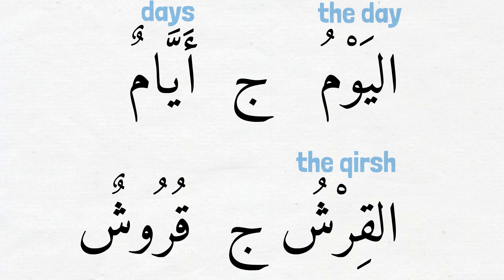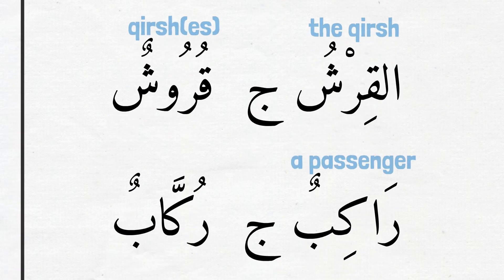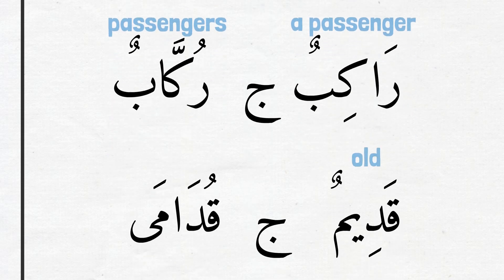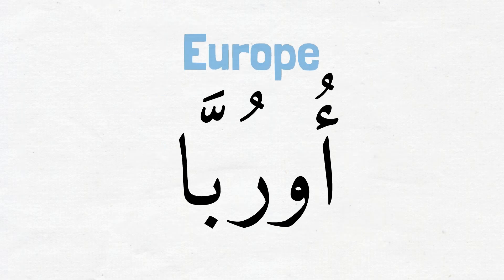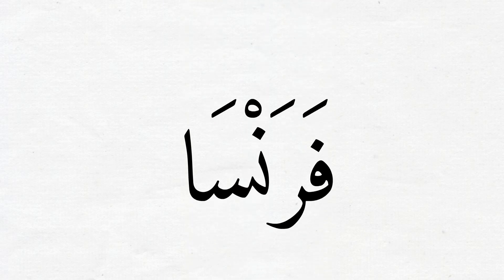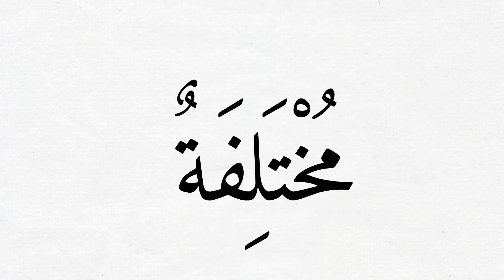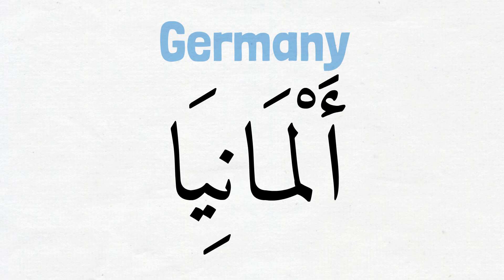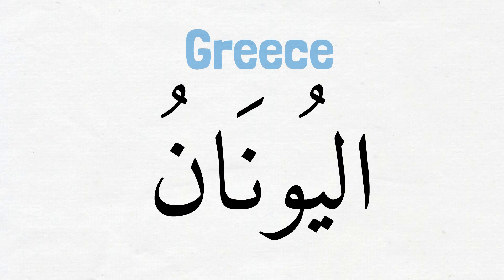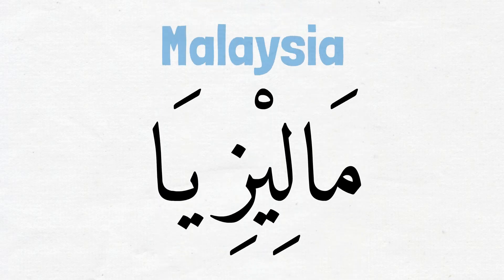القرش — plural قروش; راكب — plural ركاب; قديم — plural قدام; الجيب — the pocket, plural جيوب; أوروبا means Europe; فرنسا is France; مختلفة is different; ألمانيا is Germany; اليونان is Greece; ماليزيا is Malaysia.